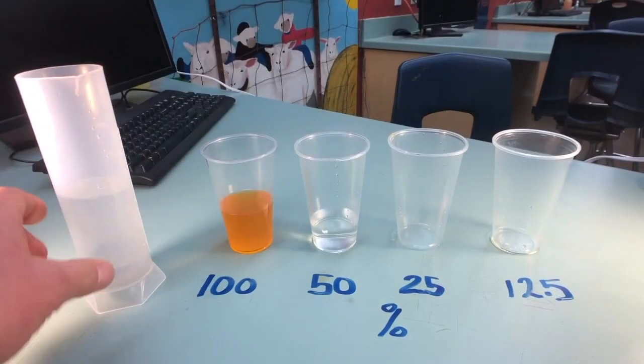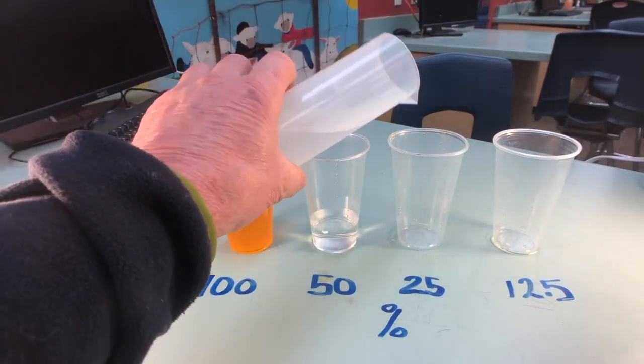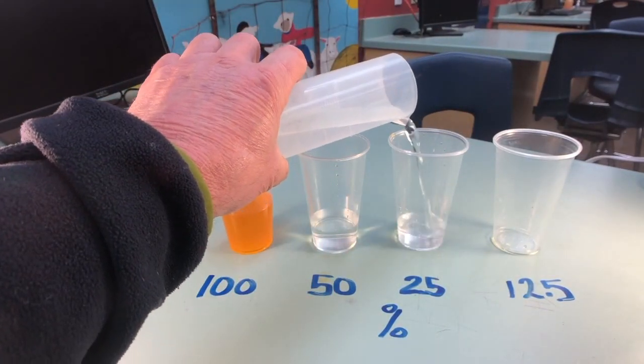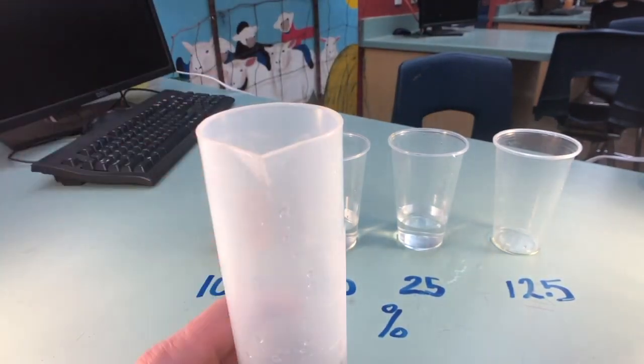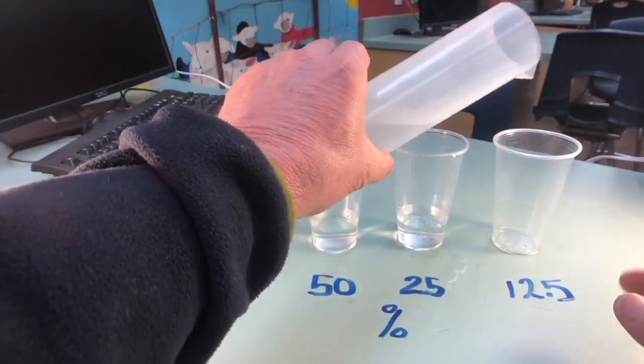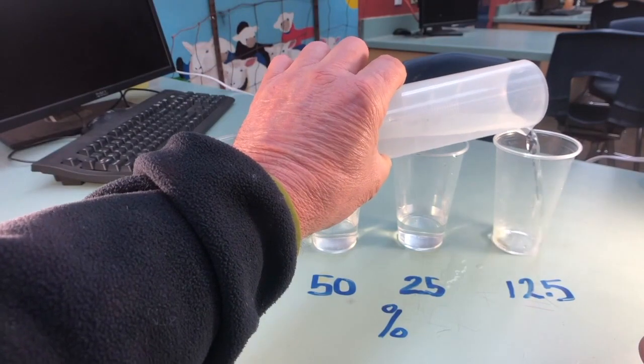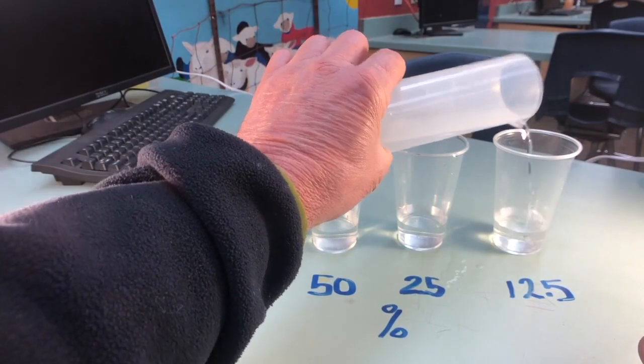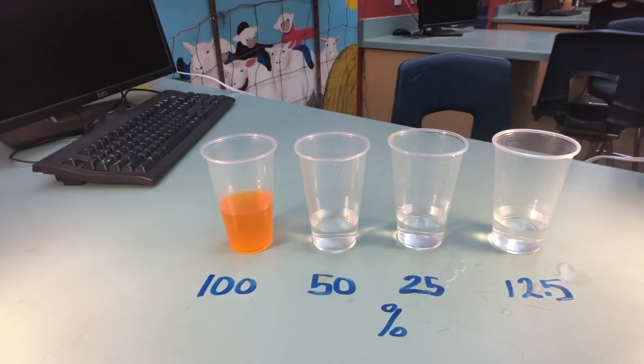And once I'm satisfied with that, I'm going to set it off to the side. And we're going to then take another 50 ml's and put in the 25% cup. And keep on checking it to make sure it's accurate. And then lastly in the 12.5% cup, we're going to be putting 50 ml's as well. And again, check it again to make sure it is accurate. Set that aside.